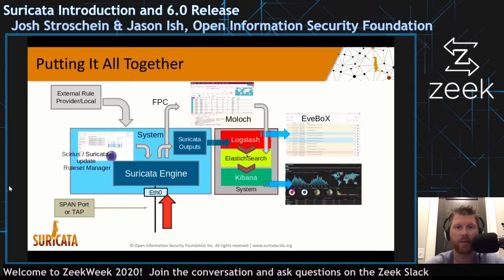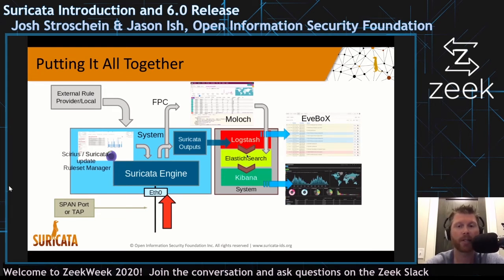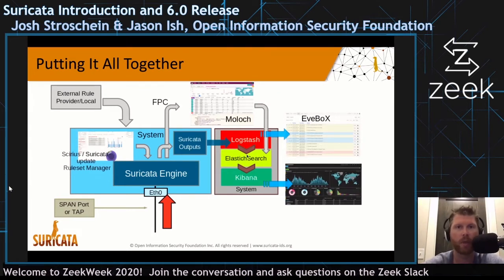Full packet capture can then be fed to Moloch or archived for later usage — historical perspective and timelining in case you're responding to an incident or troubleshooting. The primary output is a JSON file that can be shipped via Logstash or directly into Elastic, with different interfaces on top — maybe Kibana, maybe EveBox. Because the output is JSON-based, you could replace the ELK stack with Splunk or anything else that could consume that JSON.